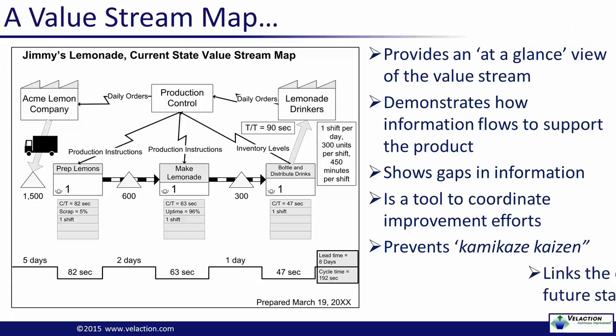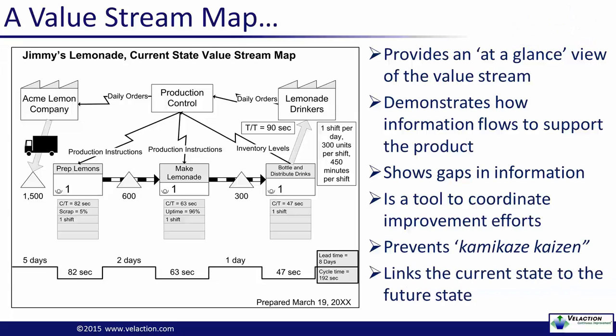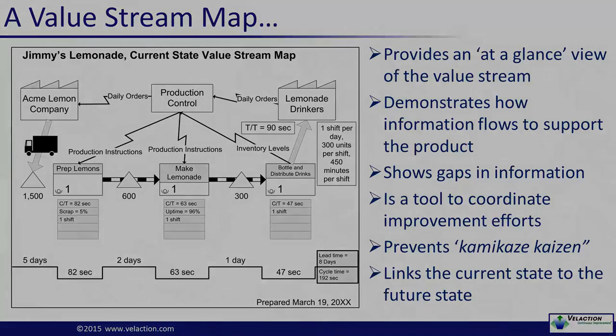The final point is that when you put all of your improvement opportunities onto your current state value stream map, you are, in effect, creating a link between the present and the future state. This presentation will focus on creating that current state map, but I want you to view it with the end in mind. The purpose is not just to create a map — the point is to use the map to create a plan that will transform your current reality to that future vision.